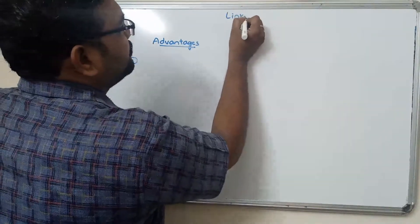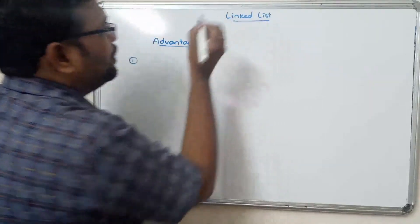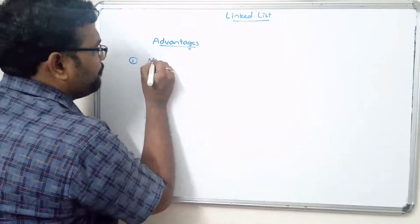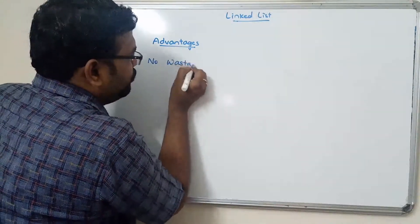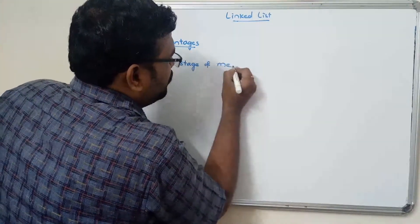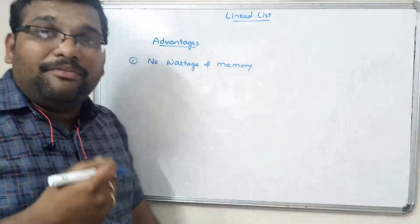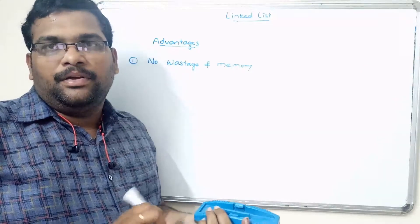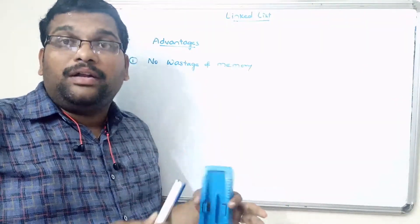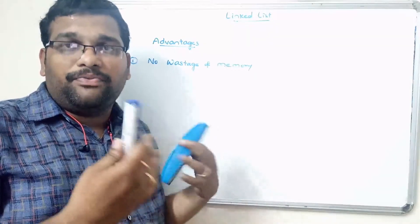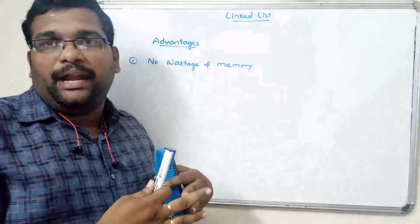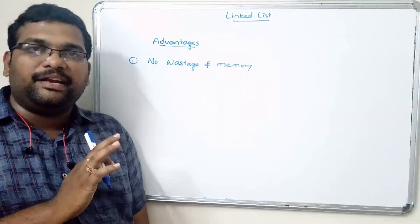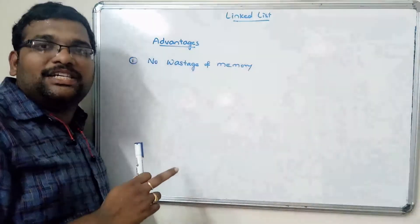The first and foremost advantage is there will be no wastage of memory. While creating every node, we use dynamic memory allocation, so we don't need to specify the number of nodes in advance. Every time we call the malloc function to allocate memory for a newly created node, so there will be no wastage of memory.